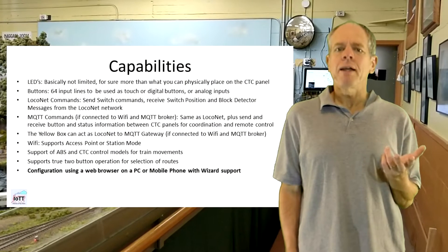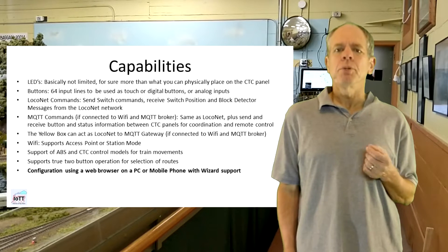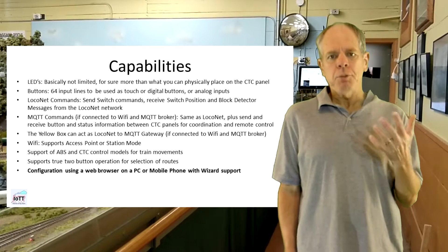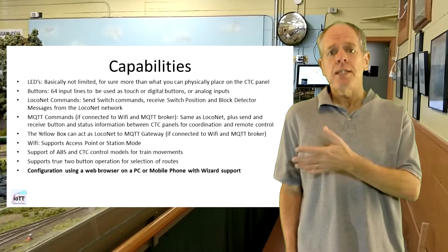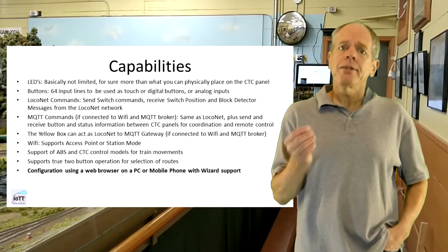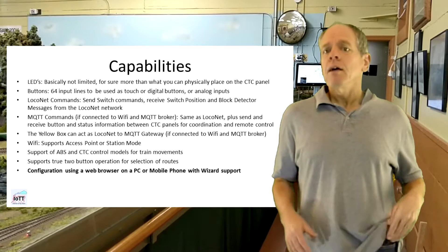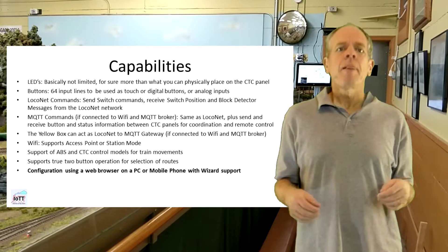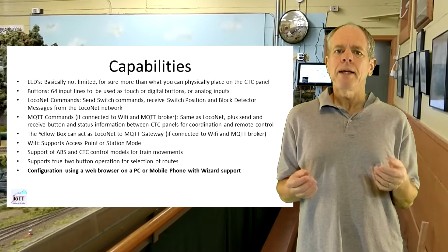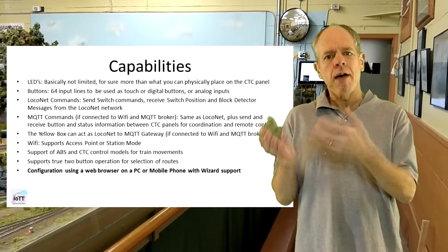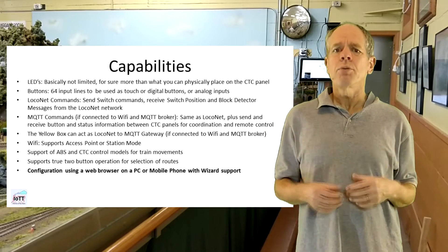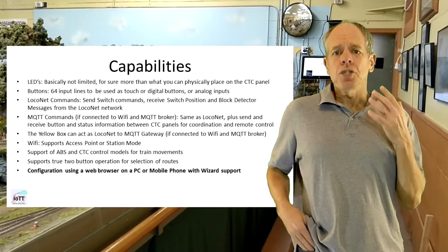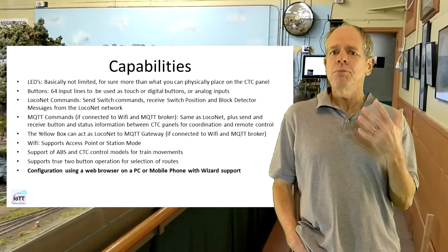The yellow box is becoming a quite powerful device. It can drive a CTC panel with hundreds of LEDs and up to 64 input switches. It can not only display track occupancy and switch positions, but it can also manage routes and track sections either in ABS or CTC control methodology, and it can connect to LocoNet directly or to an MQTT gateway via Wi-Fi. While this sounds great, the question becomes how is it possible to configure all these functions properly — how to make sure that LED X turns on when block Y gets occupied, what color and brightness should be used, and hundreds more options to choose from.